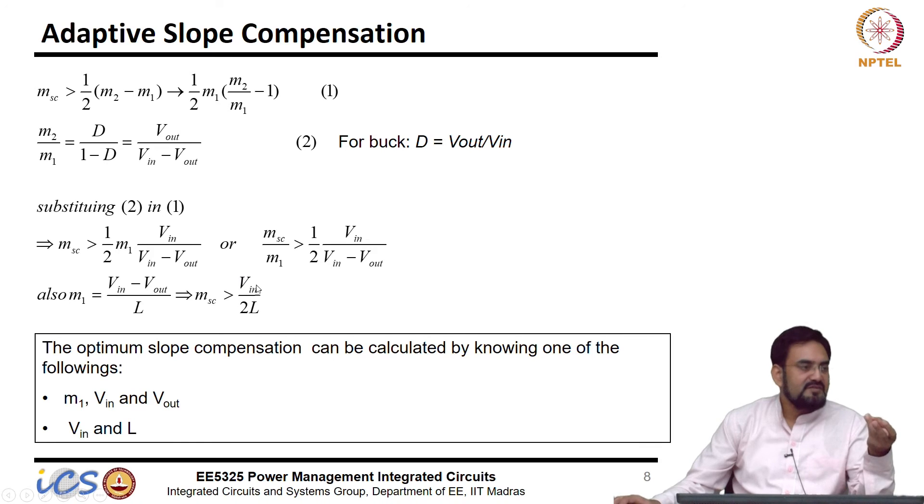So, if I know the inductor value which I already know Vout and I know Vin I can design the slope as a function of Vin if L is fixed. So, you get a dynamic compensation.